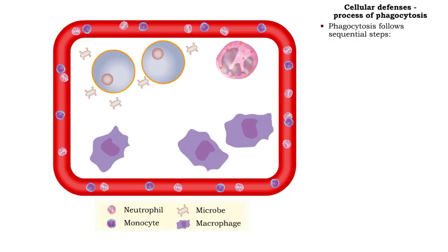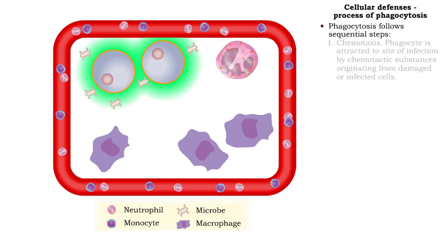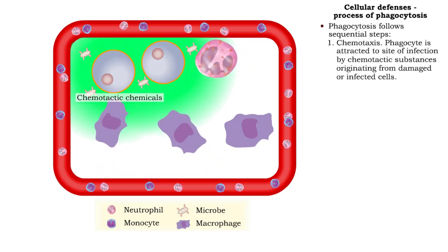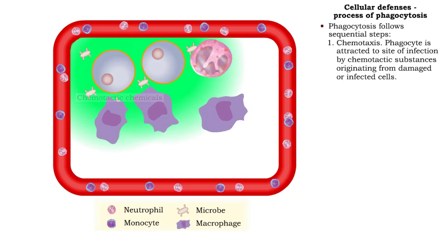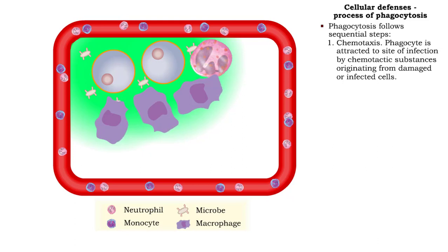Phagocytosis is common to both nonspecific and specific defense mechanisms. It operates in a sequential pattern. The pattern begins with chemotaxis: phagocytes are drawn to a site of infection by migrating towards chemotactic substances, such as microbial products, white blood cell components, damaged tissue cells, and activated complement proteins.